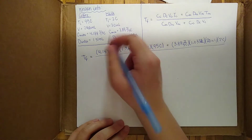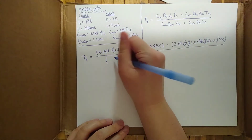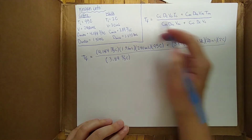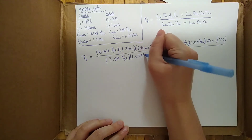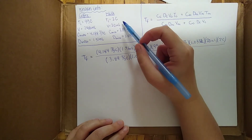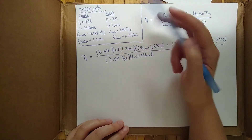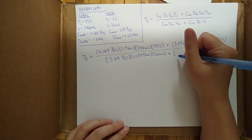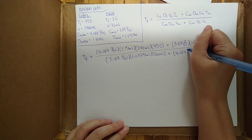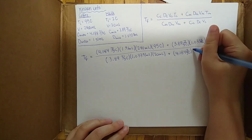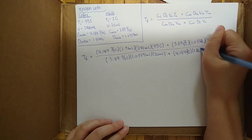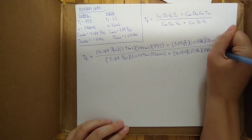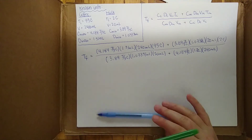Now let's do the denominator. The specific heat of the milk is 3.89 joules per gram per Celsius, times the density 1.033 grams per milliliter, times the volume of 20 milliliters. Plus the specific heat of the coffee, 4.184 joules per gram per Celsius, times the density of 1 gram per milliliter, times the volume of 240 milliliters.